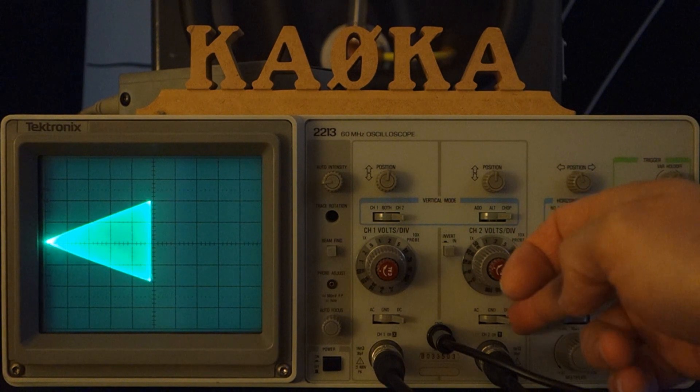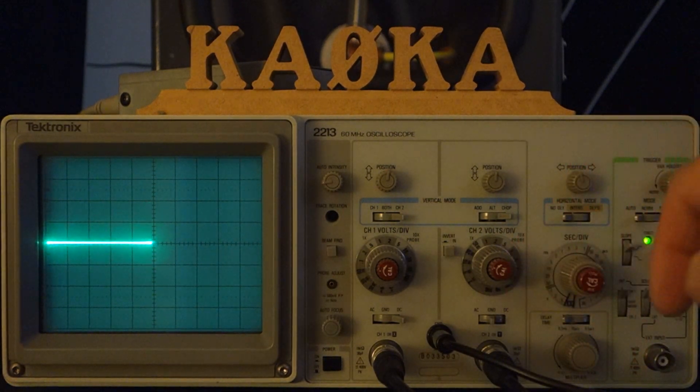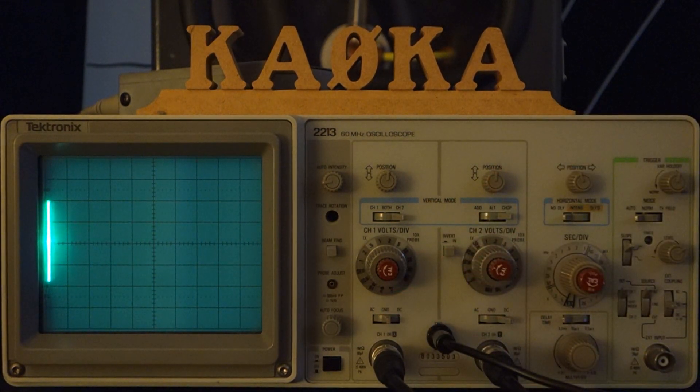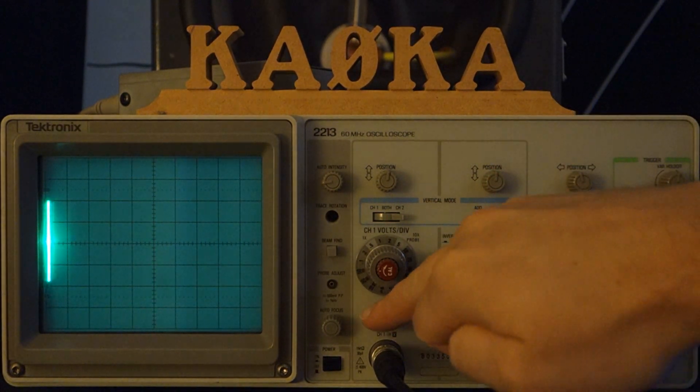And as you can see here, when it's fully modulated, we have our input from channel 1, which is the pre-amplifier signal, and the output on channel 2, which is the post-amplifier signal.